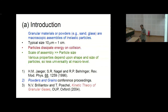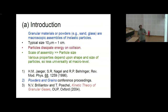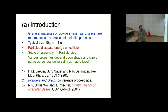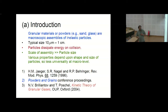Granular matter and powders are ubiquitous. Examples are sand, glass beads, ball bearings, medicine capsules, and so on. For our purpose, they are large thermodynamic assemblies of inelastic particles. You can think of a sand dune as a thermodynamic assembly of sand grains. The typical size of these particles ranges from microns to a centimeter. You can think of the rings of Saturn as being composed of granular matter — in that case you can have large particles, whereas grains of sand are in the micron range.